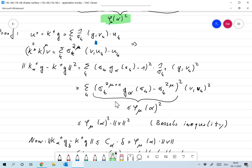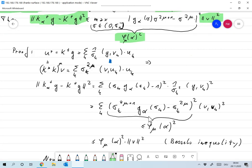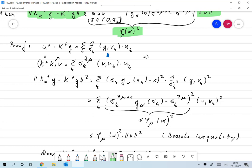Now since we have that all the σ_K are between zero and σ_1, if we take the maximum of this over all the σ in that range, then this is smaller than that maximum. So it's φ_μ of α squared, provided that maximum exists. And so if it does, if it exists, then this is smaller or equal to φ_μ of α squared times norm of V squared.